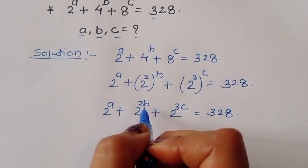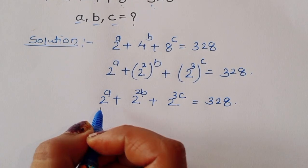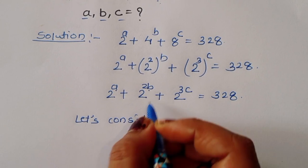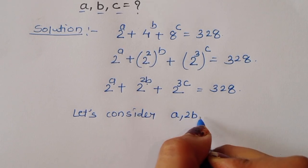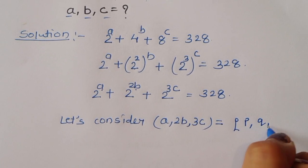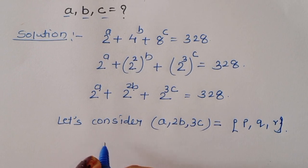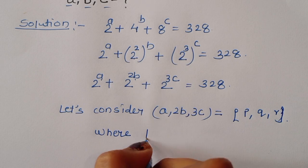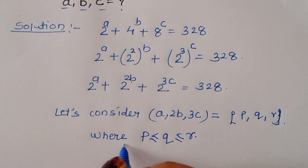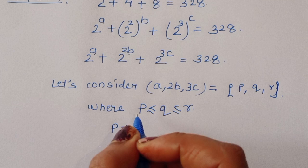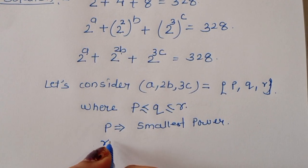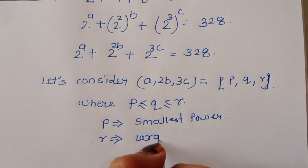Now we have powers A, 2B, and 3C. Let's consider A, 2B, and 3C equal to P, Q, and R respectively. So P is the smallest power and R is the largest power.